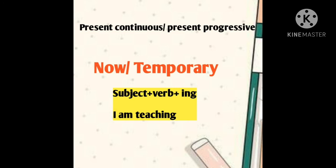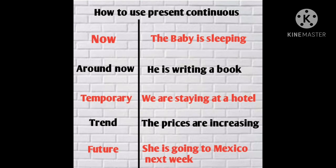We have to understand the exact use of these tenses. First, I already told you: action happening now — for example, the baby is sleeping. Around now, something somewhat around now: he is writing a book, and he is continuing to write. For temporary situations, we are staying at a hotel — for the last two days, we are staying at a hotel, for a temporary purpose.